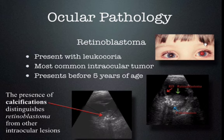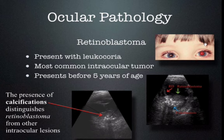Now, a few other ocular pathologies you'll run into on occasion. Retinoblastoma is generally seen in kids before five years of age presenting with leukocoria, and is the most common pediatric intraocular tumor. When you look at this on ultrasound, you'll see calcifications in a mass in the posterior portion of the globe. It is often associated with retinal detachment. The calcifications are what's key here.